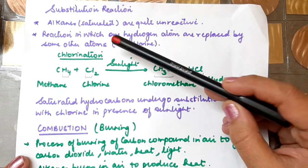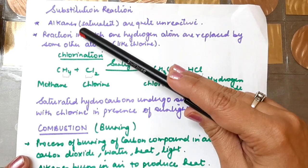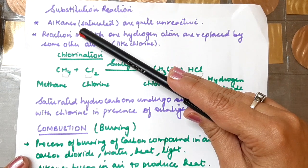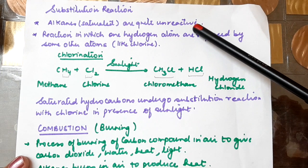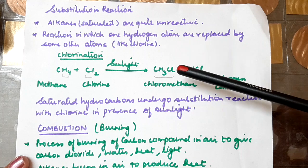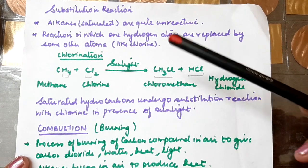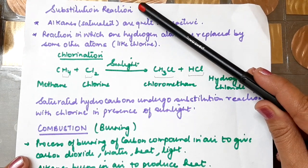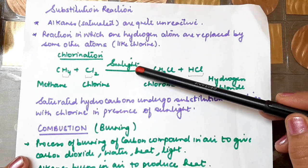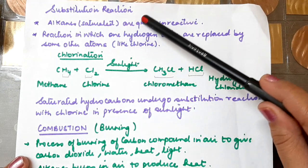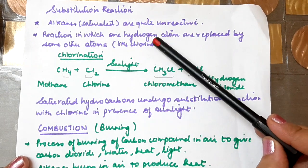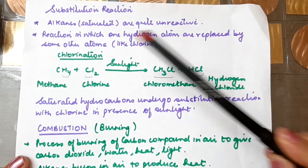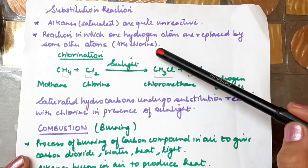The saturated hydrocarbons — that is alkanes — have carbon-carbon single bonds. That is why alkanes are quite unreactive. Saturated hydrocarbons don't react with many substances, but they undergo substitution reaction with chlorine in the presence of sunlight. Substitution reaction is a reaction in which one hydrogen atom is replaced by some other atom, like chlorine.